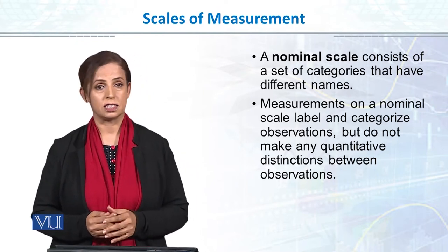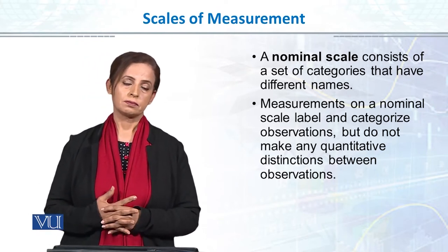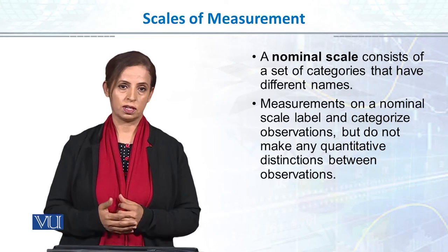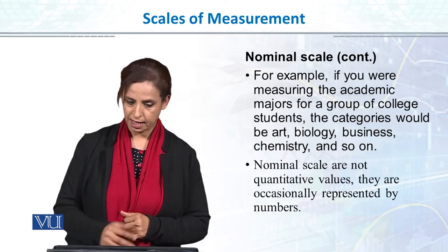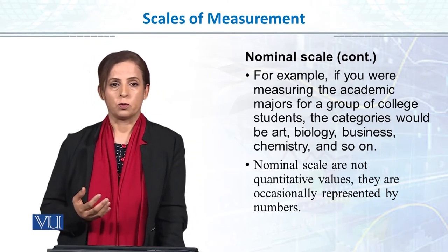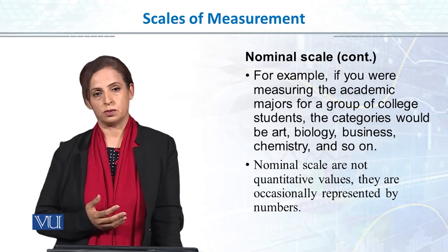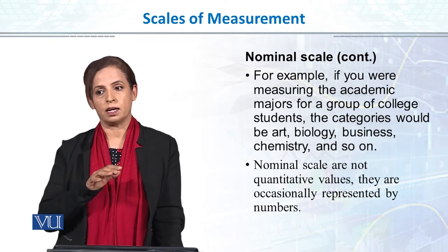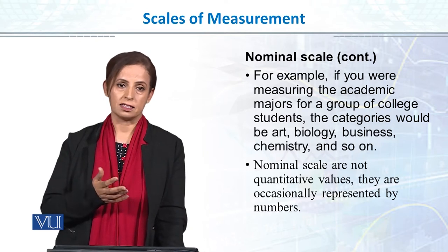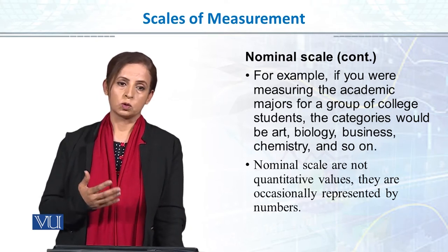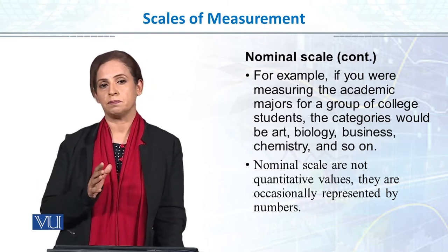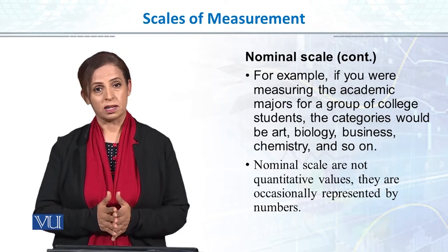In nominal scale, we cannot say that 5 is more than 1 or 10 is more than 5 — they are just to identify the categories. In psychology, when you collect data or research questions, we usually have demographic variables. Demographic means you ask the individual: what is your gender, what is your socioeconomic status, what is your marital status? When you add data in SPSS, you use numbers. Most demographic variables are measured on a nominal scale.